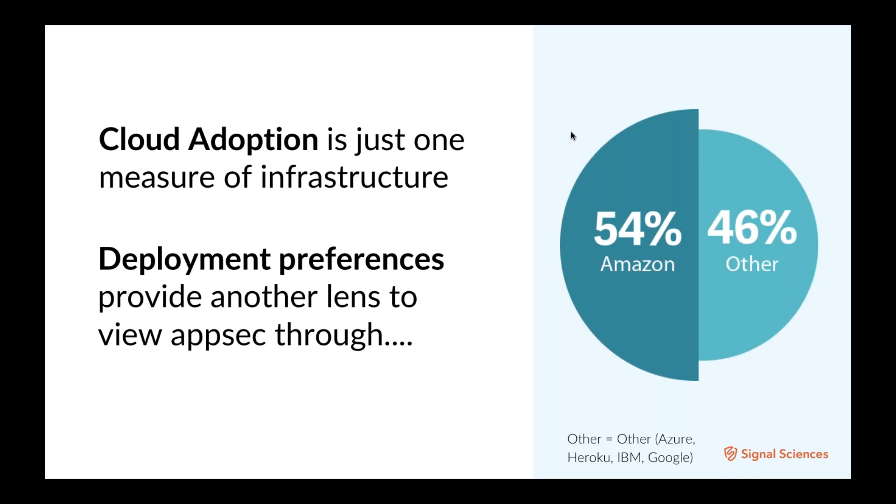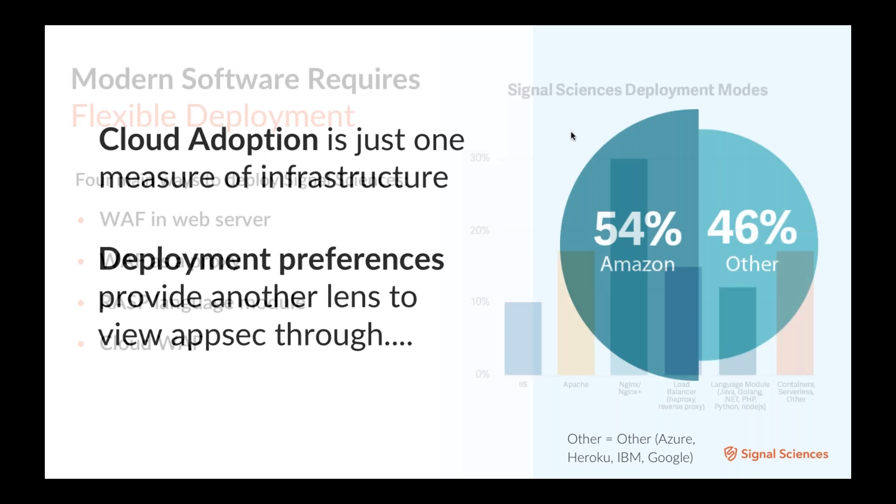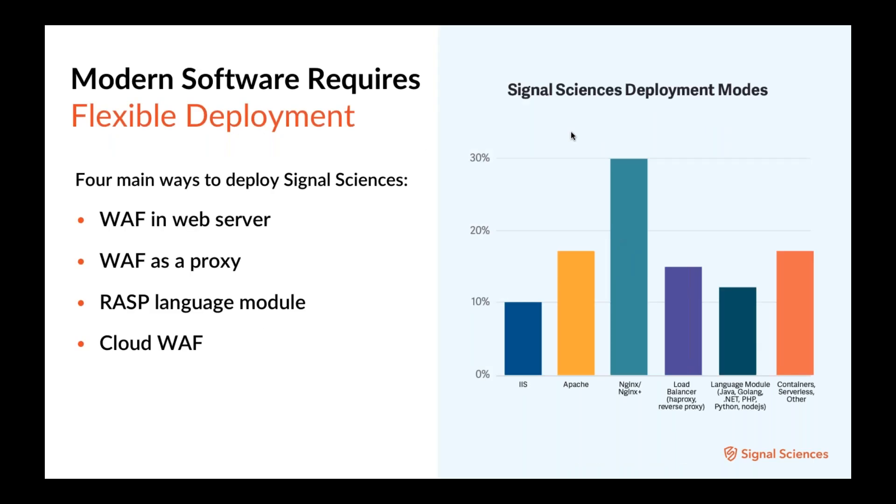Signal Sciences customers range from some of the largest websites on the planet to healthcare startups to media and large enterprises and more. And we see that across these different verticals, we looked at how our customers were using various infrastructure. And basically, as the chart shows here, Amazon is pretty dominant. That's no surprise. They were one of their, I believe they came out in 2006, AWS was their first cloud-based service that was available to folks. And we've seen that other cloud platform providers, the usage heavily skews obviously towards AWS, but there are also others that are out there. Azure, Heroku, IBM, Google's cloud platform. But basically, cloud adoption is just one measure of infrastructure. The way that customers deploy our solution within that infrastructure is another lens to view application security through.